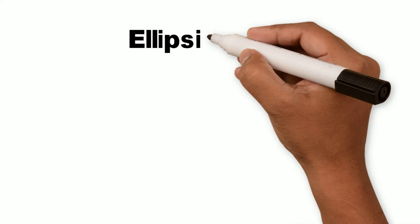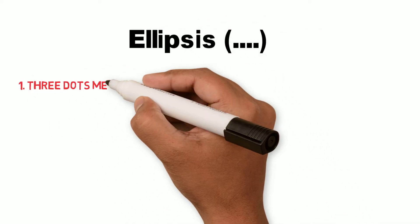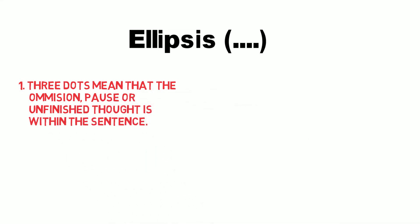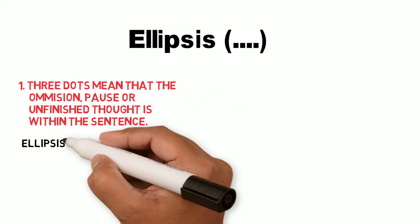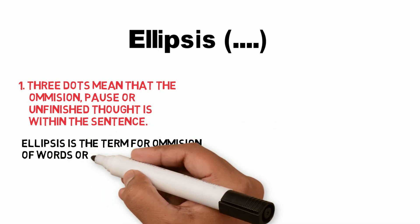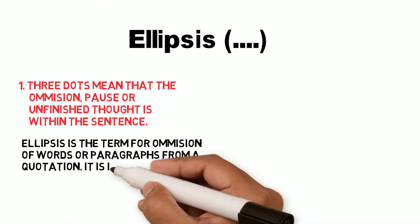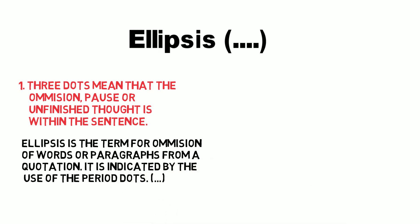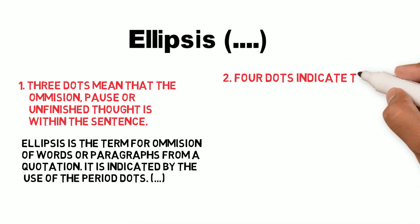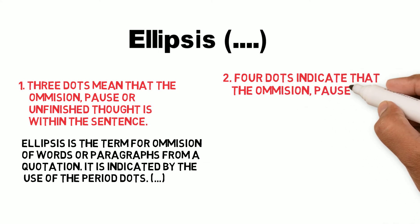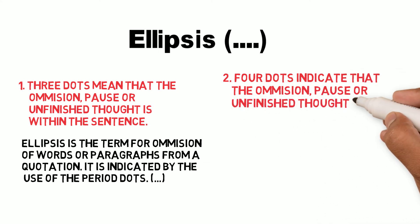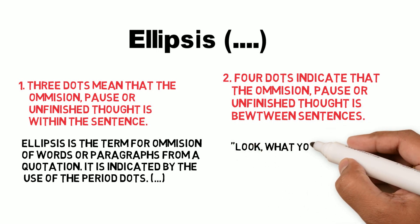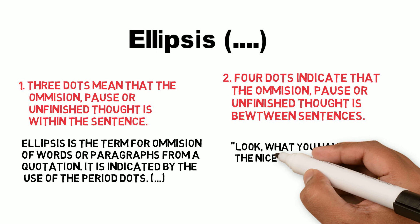Ellipses. Three dots mean that the omission, pause, or unfinished thought is within the sentence. Ellipses is the term for omission of words or paragraphs from a quotation. It is indicated by the use of period dots. Four dots indicate that the omission, pause, or unfinished thought is between the sentences. For example, Look what you have done. The nice man.